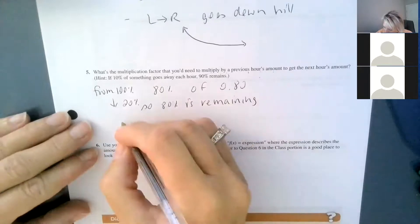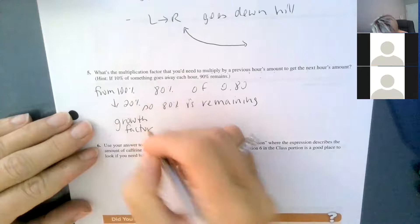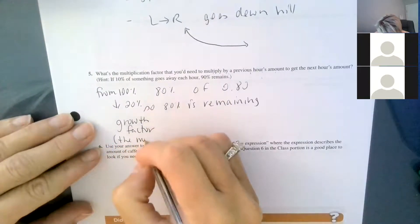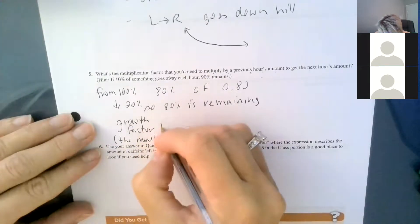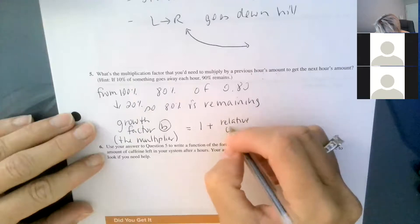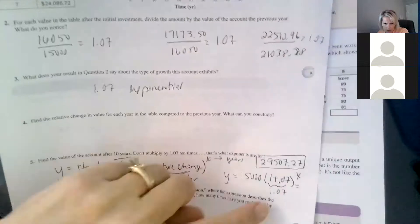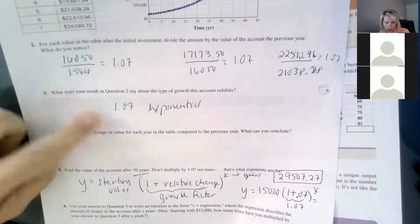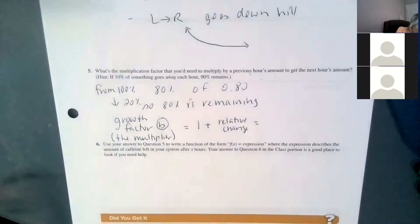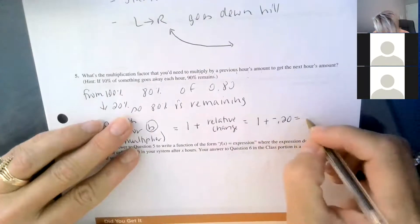The growth factor — the multiplier, B in our equation — is equal to 1 plus the relative change. Back on the last problem, our relative change was 0.07, so we added that and got 1.07 as our multiplier. But now our relative change is negative 0.20, so when we take 1 plus negative 0.20, we only have 0.8 remaining.